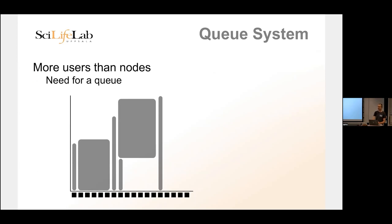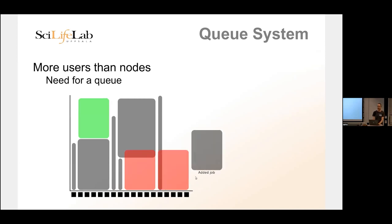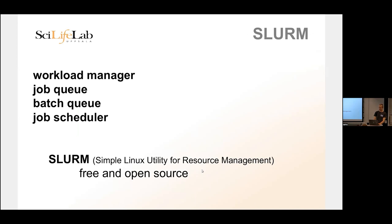Say this computer is booked until tomorrow, these are busy, but these are free right now. If you want one computer for a short time, it could start directly on one of the free ones. But if you ask for something too long or too wide, you might have to wait until tomorrow. The queue will say: these are free but you want five computers and your job is too long, so just wait. The beauty of queue systems is you just send in your job and go home. If it starts in the middle of the night, that's fine — the queue system handles all that for you.